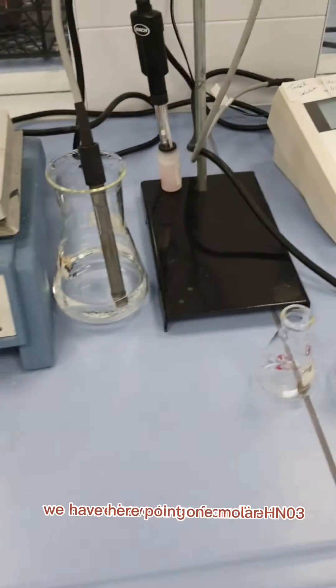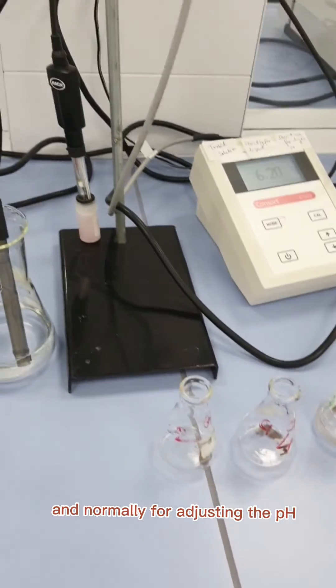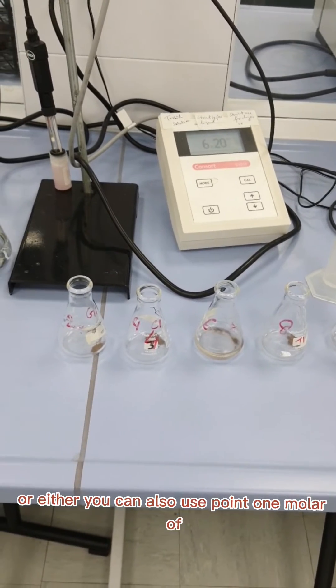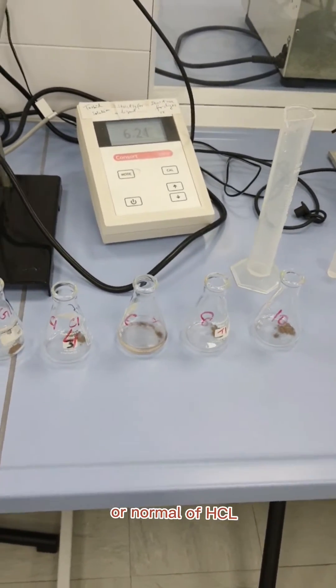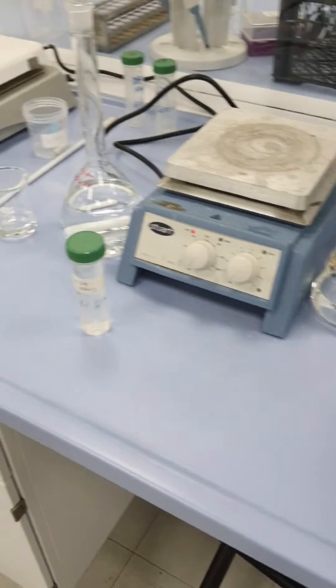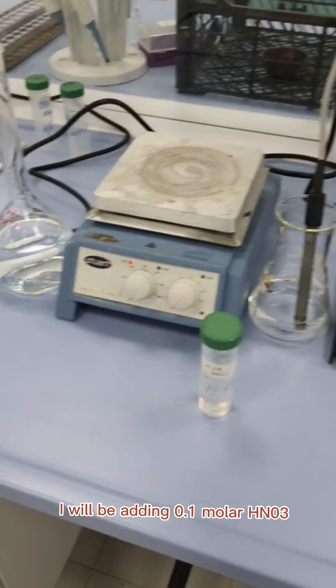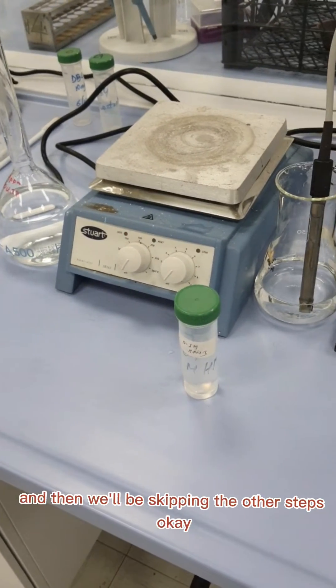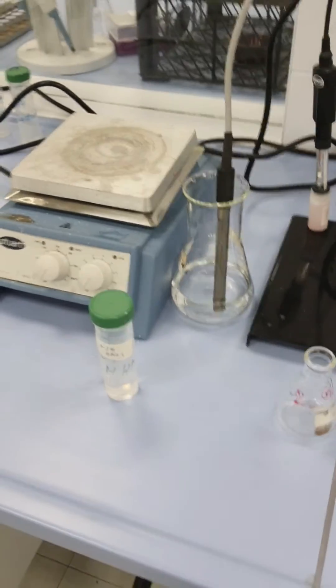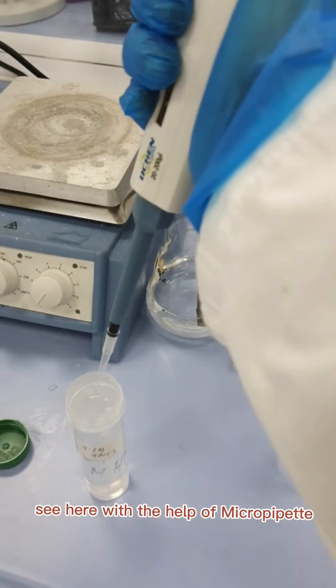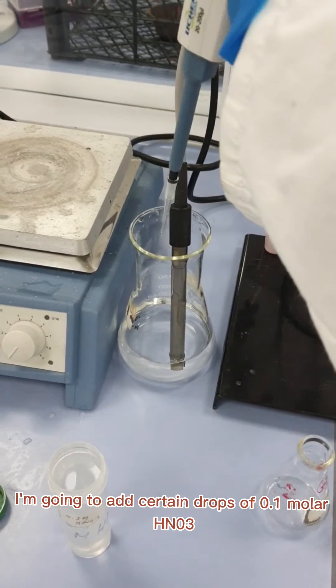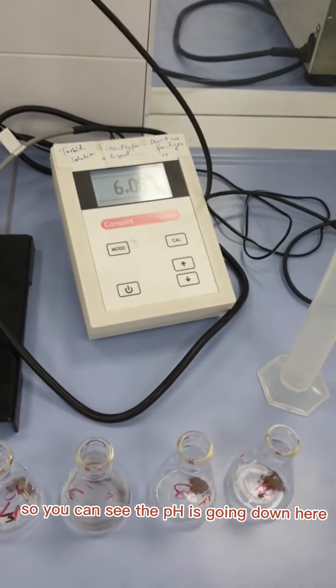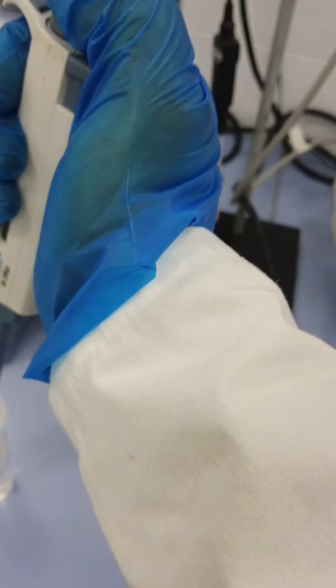Now what I will do is adjust the pH. For adjusting the pH we use 0.1 molar HNO3 or you can also use 0.1 molar NaOH. Now I am going to decrease the pH. In that case I will be adding 0.1 molar HNO3. With the help of a micropipette, I'm going to add certain drops of 0.1 molar HNO3. You can see the pH is going down here slowly.